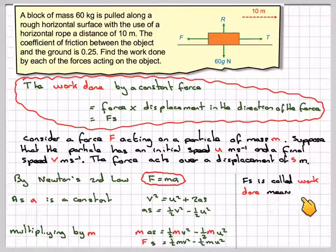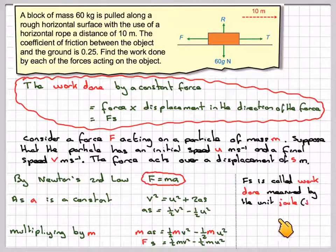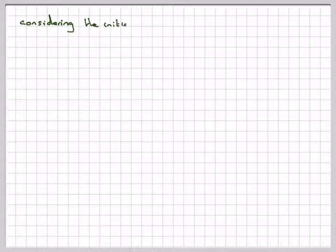F S is called the work done. It is measured by a unit, by joule, and we use the capital J for that. All right. If we now return to our original problem.